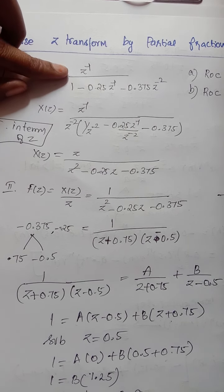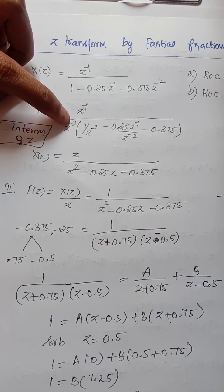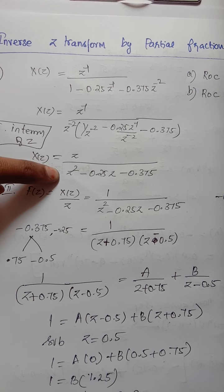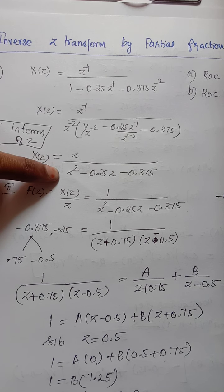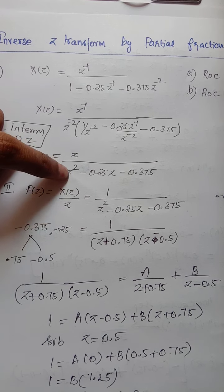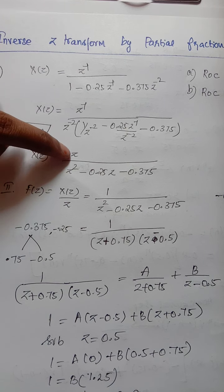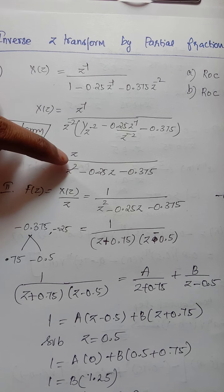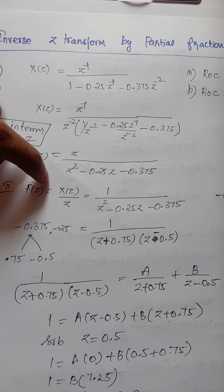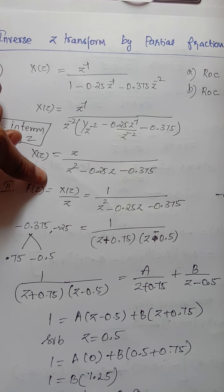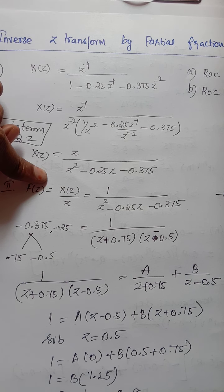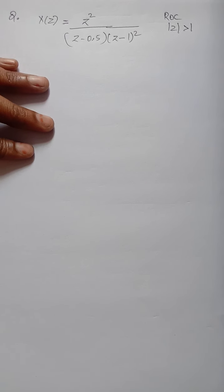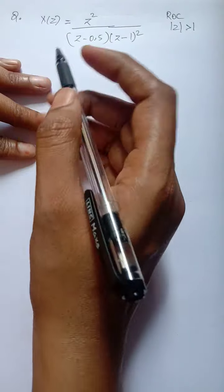One important thing to remember: if the denominator power is higher than the numerator, use the partial fraction method. If they are equal, use the long division method first. If both are equal you can also use partial fraction method after applying long division.